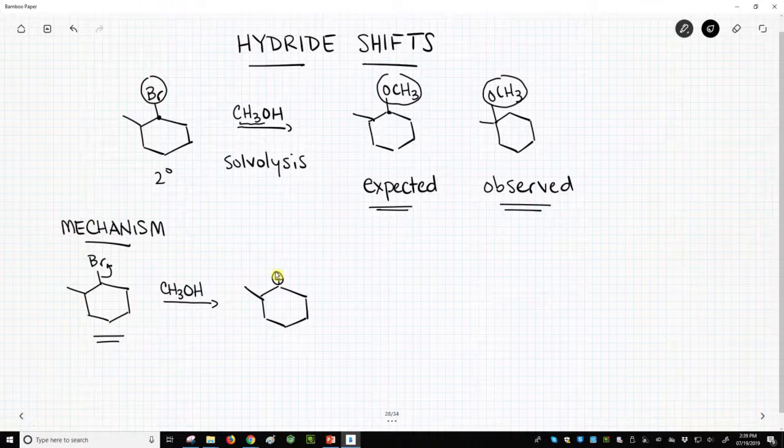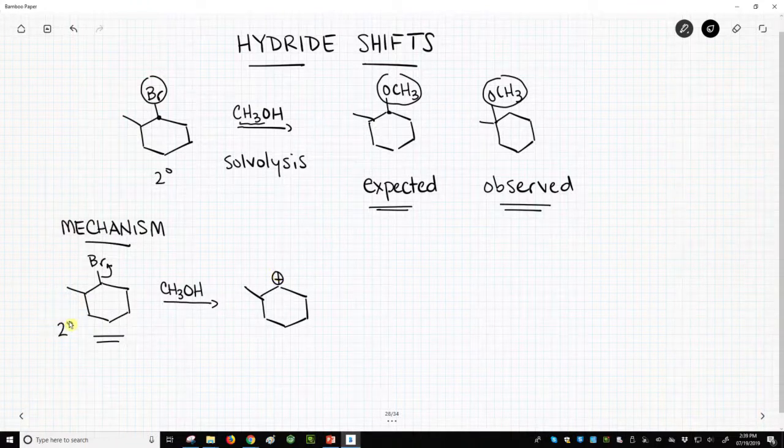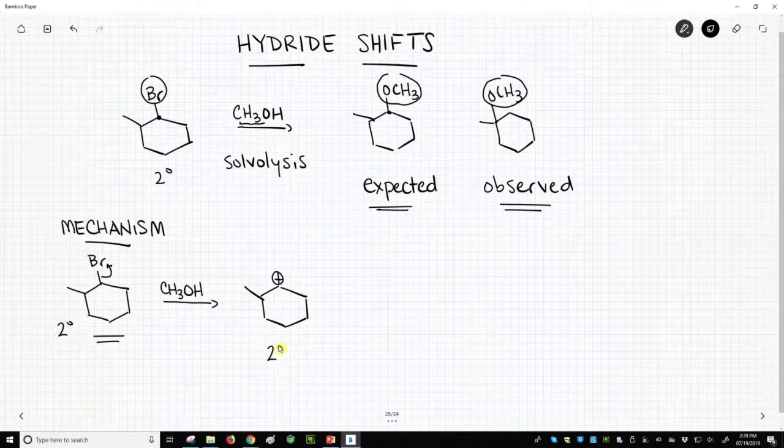Now, what kind of carbocation is this? Well, we started with a secondary bromide, so we get a secondary carbocation. Secondary carbocations are okay, but they're not the best. It would be better if this were a tertiary carbocation, but we can't just pick and choose what carbocation we get - it comes from the halide.